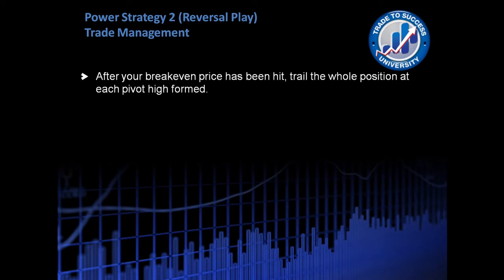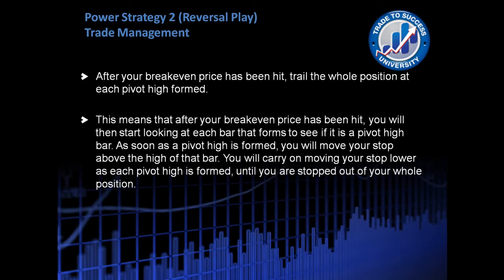After your break even price has been hit, you trail the whole position as each pivot high is formed. Because we're in a short position, we're looking for pivot highs now. After break even is hit, you start looking at each bar that forms to see if it is a pivot high bar. As soon as a pivot high bar is formed, you move your stop above the high of that pivot bar. You then carry on moving your stop lower as each pivot high is formed until you are stopped out of your whole position.